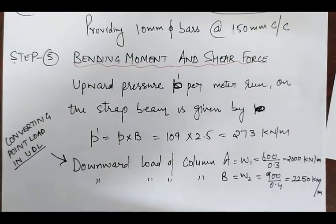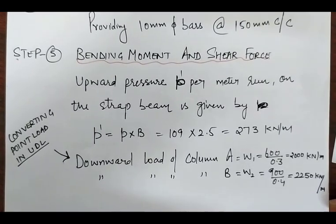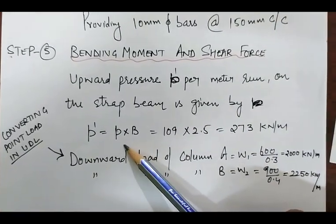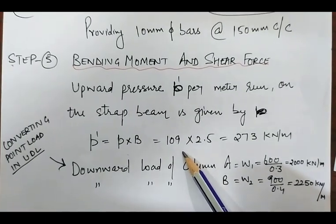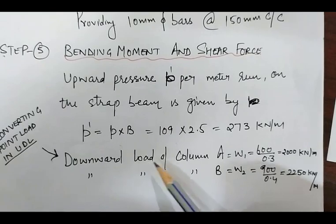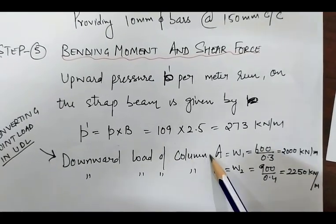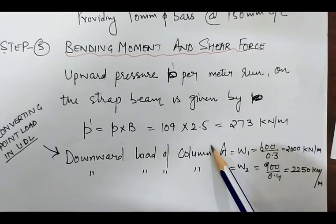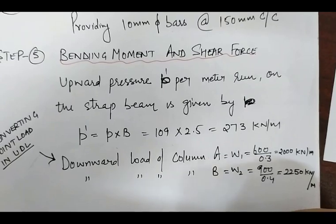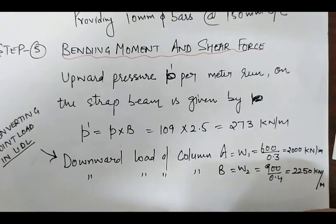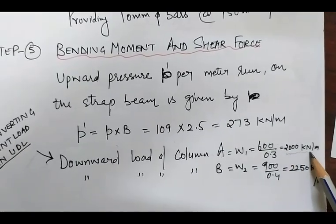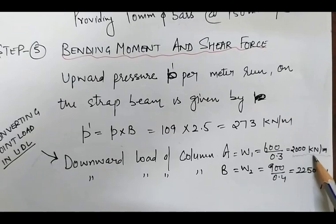Step number five is bending moment and shear force calculation. The upward soil pressure p-dash per meter run on the strap beam is given by 109 kilonewton per square meter, converting to per meter that equals 273 kilonewton per meter. The downward load for column A is 600 kilonewton, converted to UDL. The column A size is 300mm x 300mm, and dividing the load by the width gives 2000 kilonewton per meter.